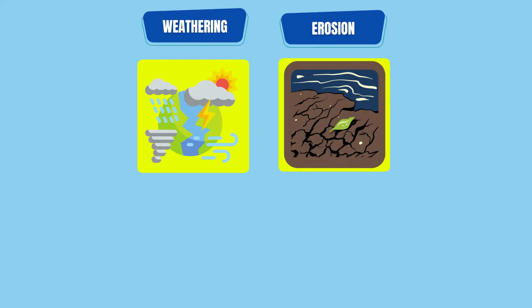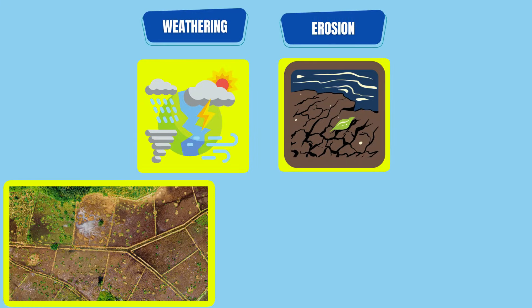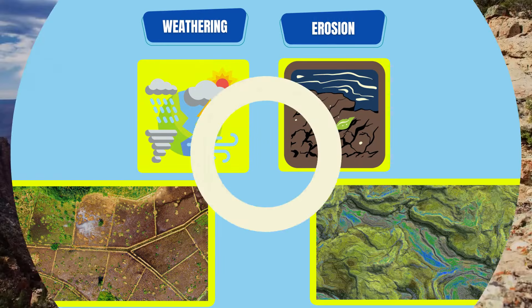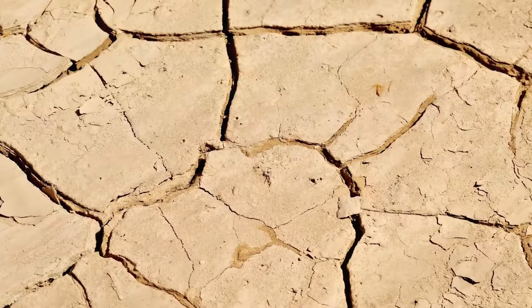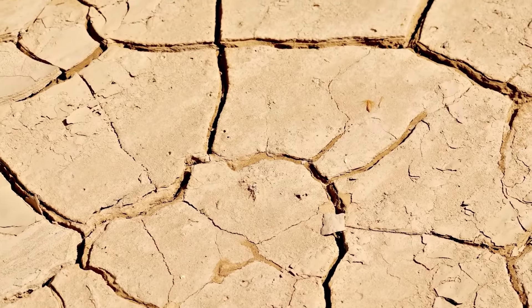In addition, weathering and erosion create predictable patterns which we can see in topographic maps, allowing scientists to predict how the land features on the map will change over time. This proves that the Earth's surface is constantly changing.